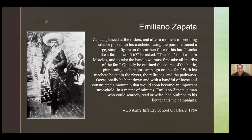This passage is from the U.S. Army Infantry School Quarterly, 1954, describing the Mexican revolutionary Emiliano Zapata using the most basic, elemental form of a sand table — literally scratching marks in the dirt. 'Zapata glanced at the orders. After a moment of brooding silence, he picked up his machete. Using the point, he traced a large, simple figure on the earthen floor of his hut. Looks like a fan, doesn't it? The fan is all of Eastern Morales.' He quickly outlined the course of the battle, pinpointing each major campaign on the fan, cutting in rivers, railroads, pathways.